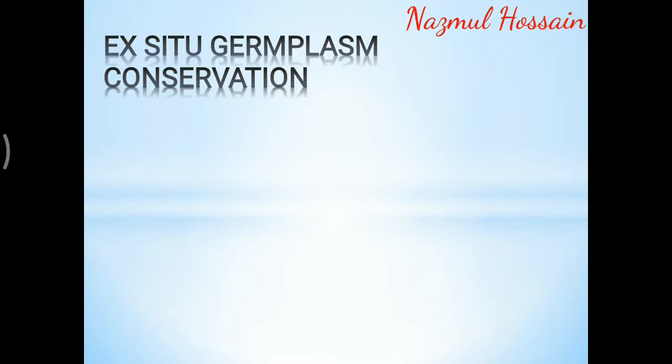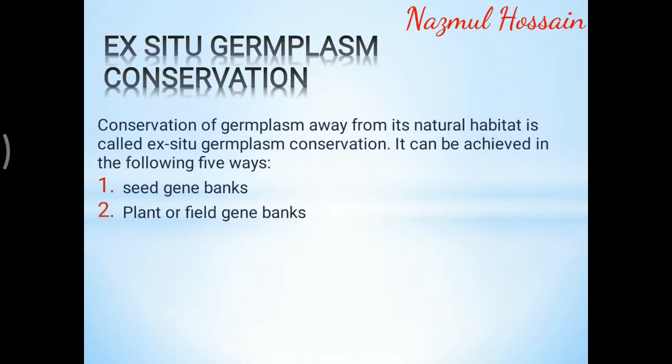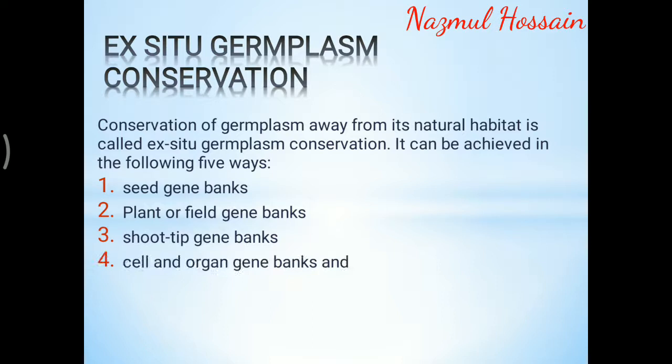Ex-situ germplasm conservation: conservation of germplasm away from its natural habitat is called ex-situ germplasm conservation. It can be achieved in the following five ways: seed gene banks, plant or field gene banks, shoot tip gene banks, cell and organ gene banks, and DNA gene banks.